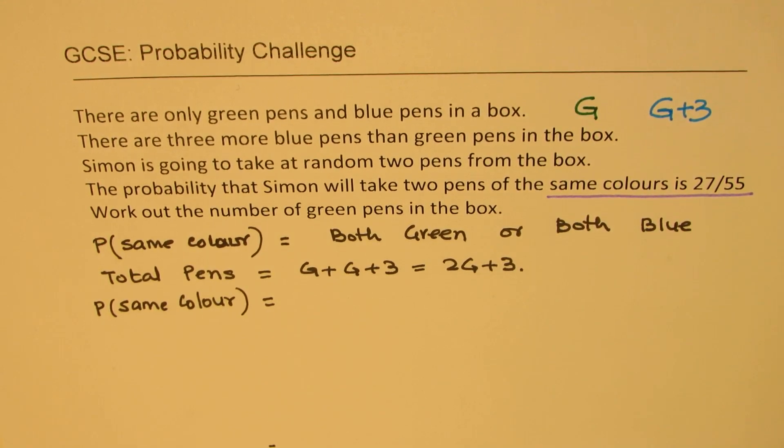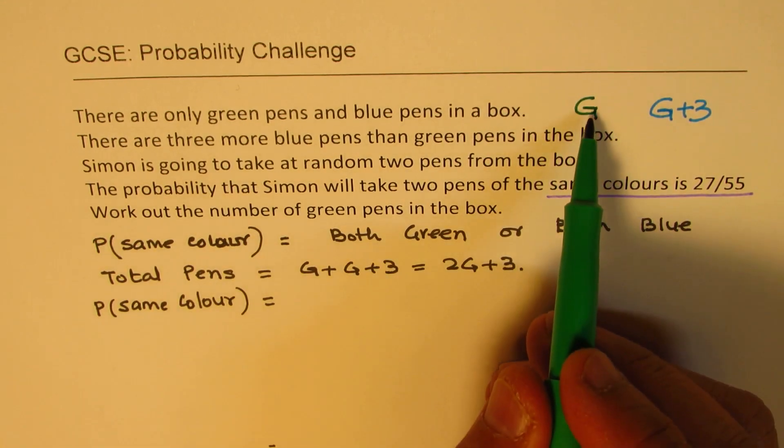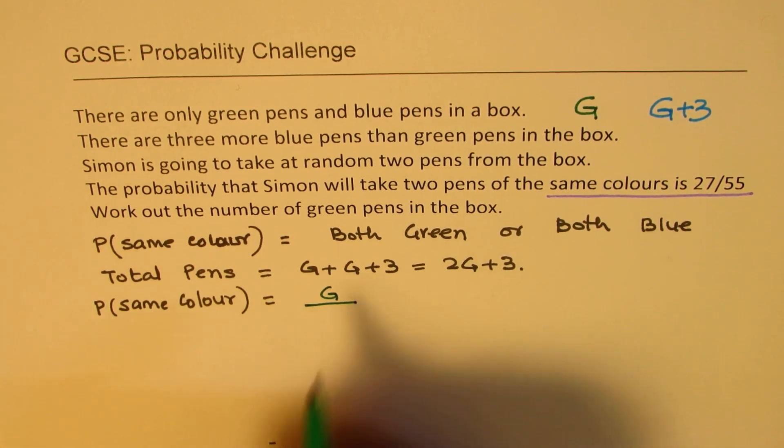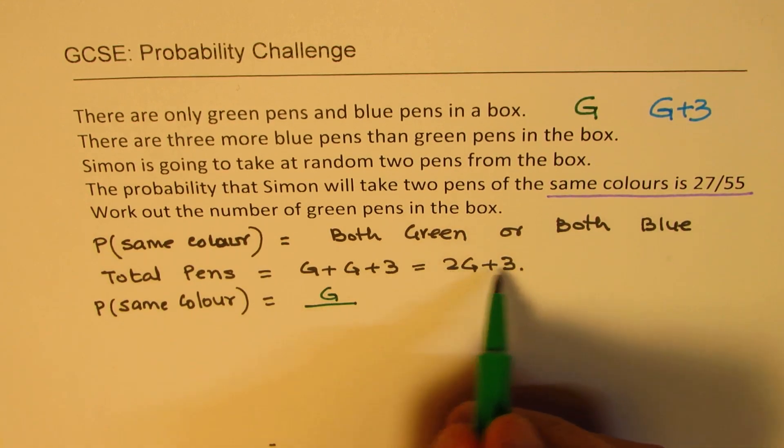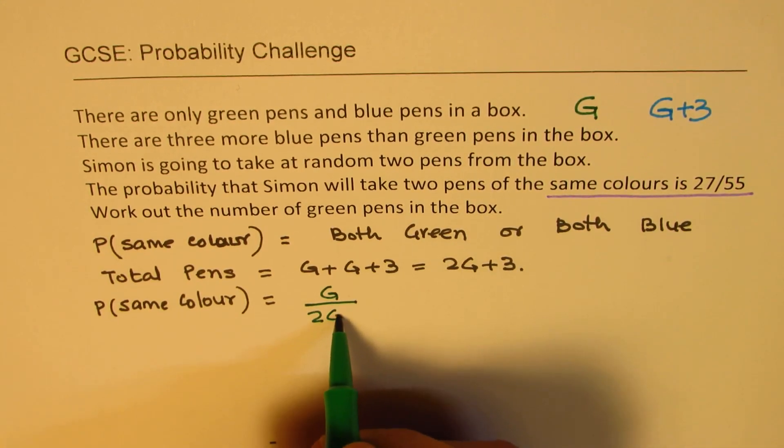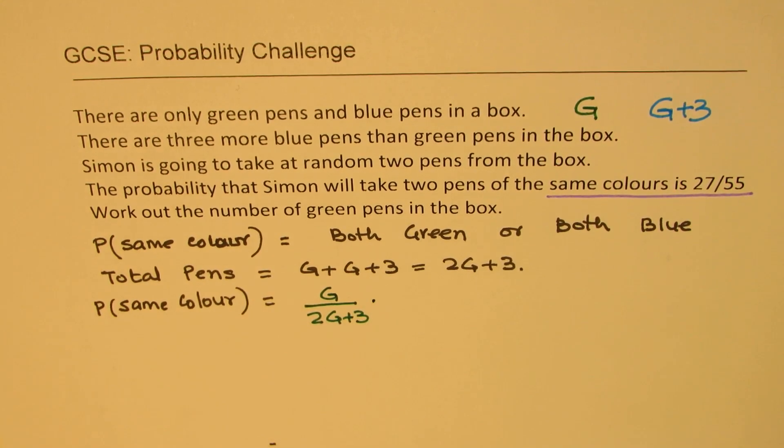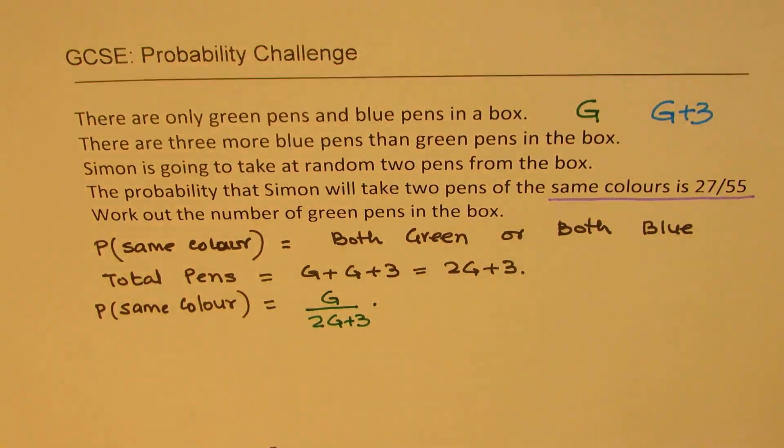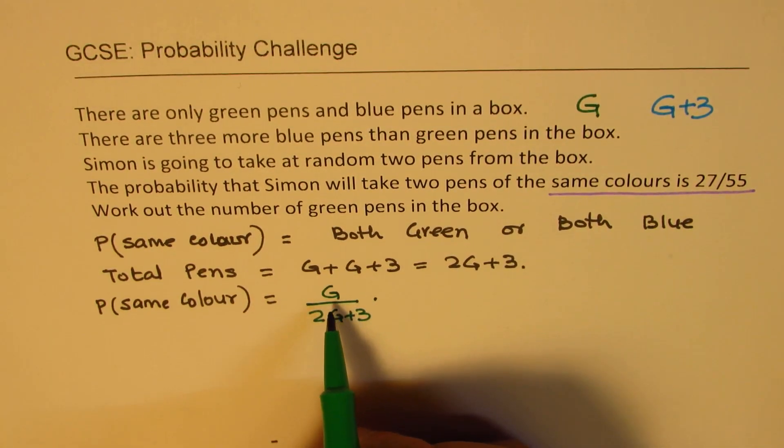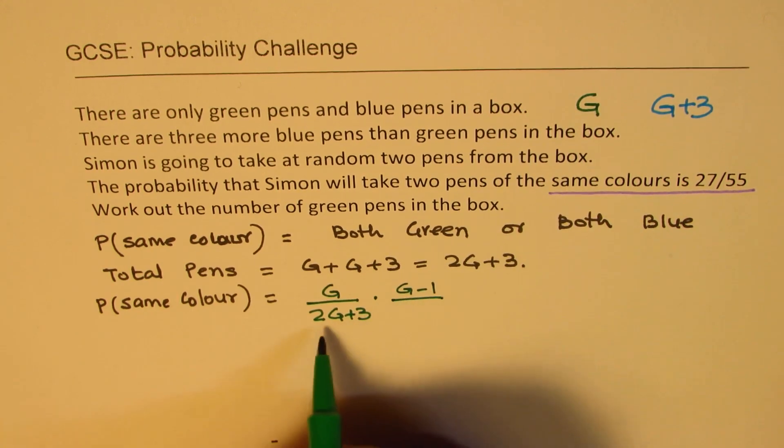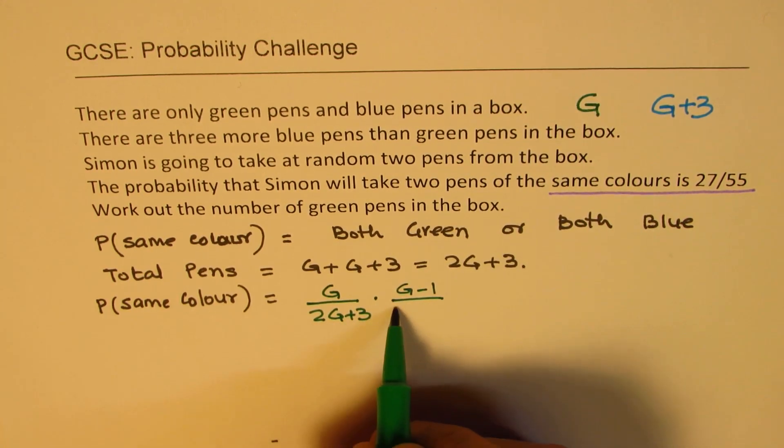First is green. There are G greens. That means the probability will be G divided by total. Total will be 2G plus 3. Picking up green first will be this probability. Once a green pen is picked, there is one less green pen. The probability now reduces to G minus 1. The total also reduces by 1, so it becomes 2G plus 2.